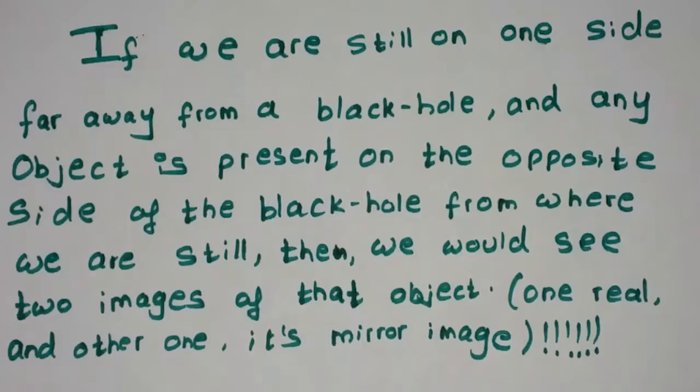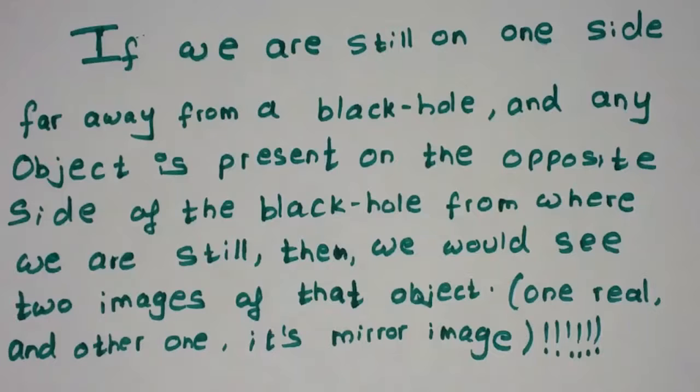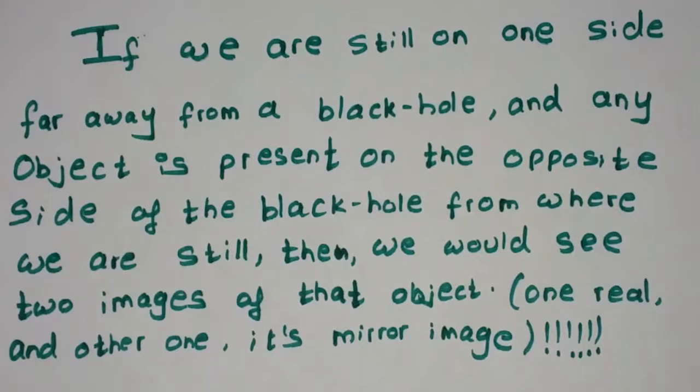One real and one is a mirror image. That sounds weird, right? Because we are on one side of the black hole and that object is on the other side. To be honest, if there was not a black hole, we wouldn't see anything. But here we are seeing not one but two images: one is real and one is its own mirror image. So for pictorial representation, let me just draw you a diagram.